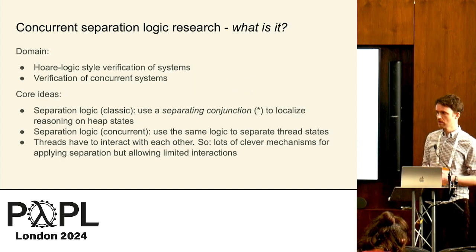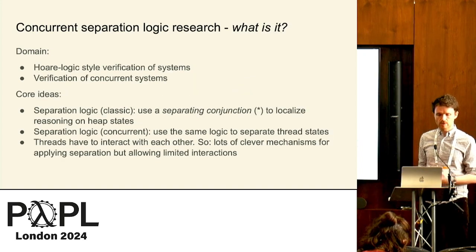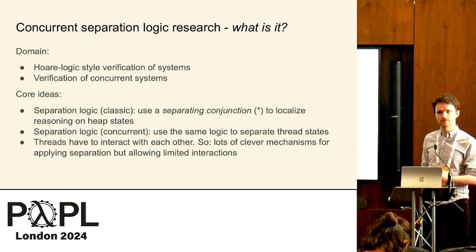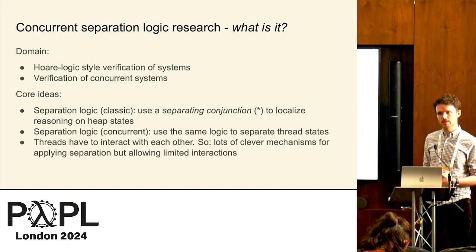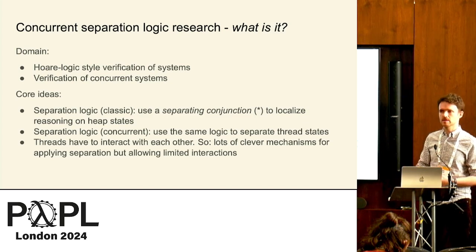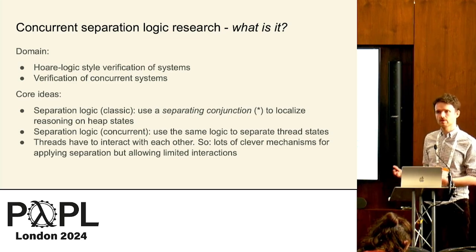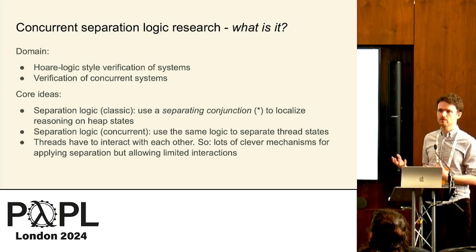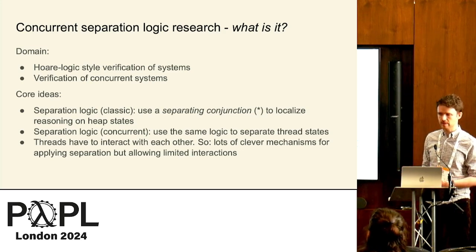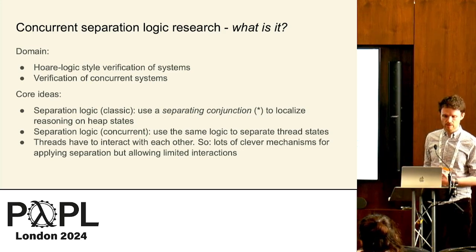Concurrent separation logic is another great flavor. Here we're in the space of Hoare logic style verification of systems and verification of concurrency. Separation logic gives you the idea of separation in reasoning — heap cell A and heap cell B are separated, so you can reason about A without touching B. In concurrent separation logic, we extend this to multiple threads, which have their own thread-local resources and can operate without interacting with each other — though of course threads do have to interact.